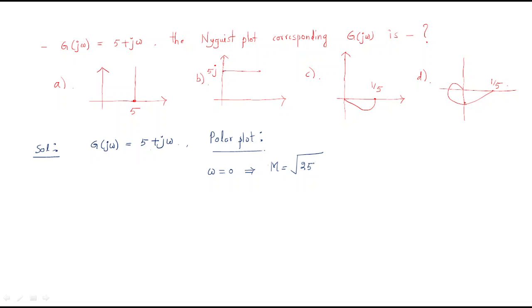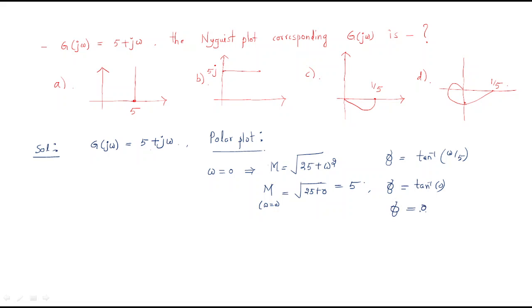For the polar plot, we evaluate at ω = 0. The magnitude is √(25 + ω²), so at ω = 0 the magnitude is √25 = 5. The phase is tan⁻¹(ω/5), so at ω = 0 the phase is tan⁻¹(0) = 0°. So at ω = 0, magnitude is 5 and phase is 0°.